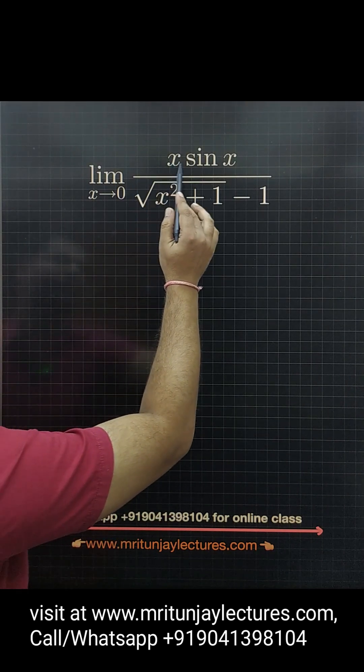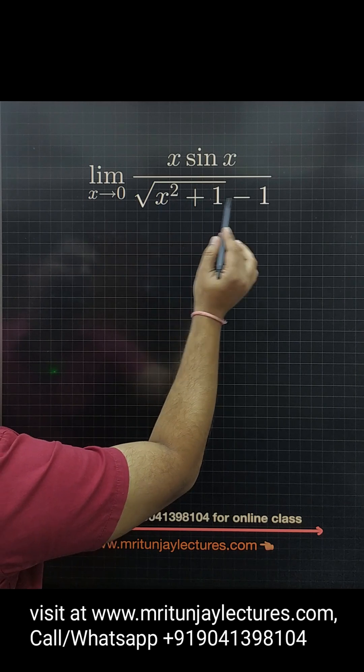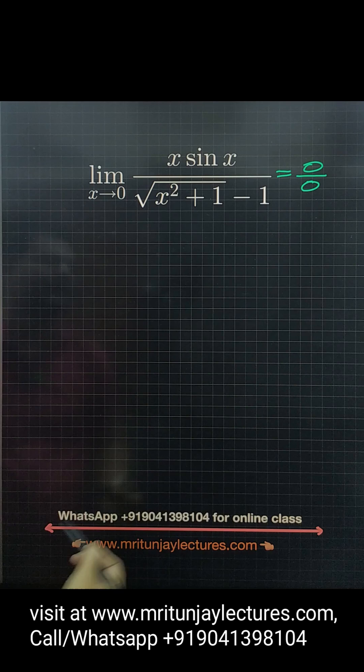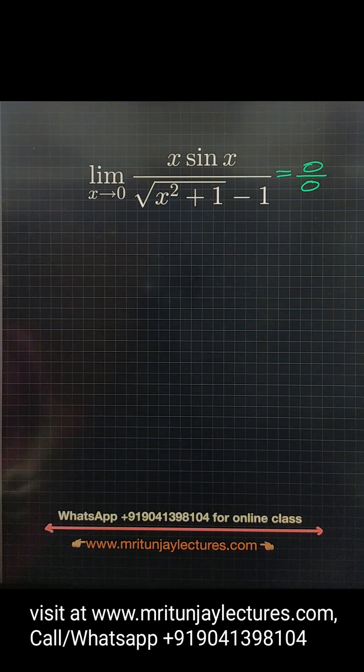Now question of the day, how can we solve this type of problem? Put x is equal to 0, then we got 0 by 1 minus 1, which is 0. So we got 0 by 0 form.